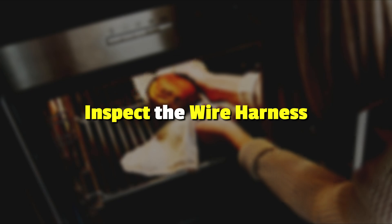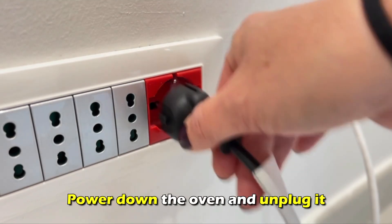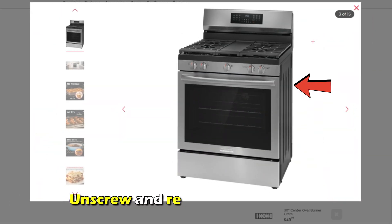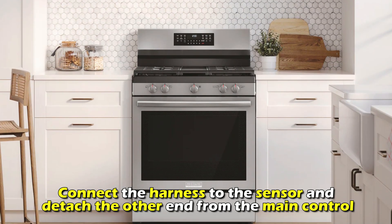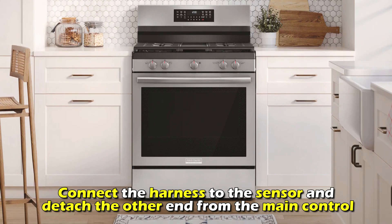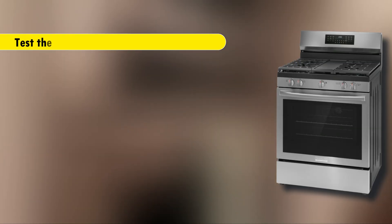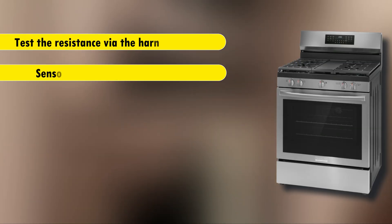Inspect the wire harness. Power down the oven and unplug it. Unscrew and remove its back panel. Connect the harness to the sensor and detach the other end from the main control. Test the resistance via the harness and sensor using a multimeter.